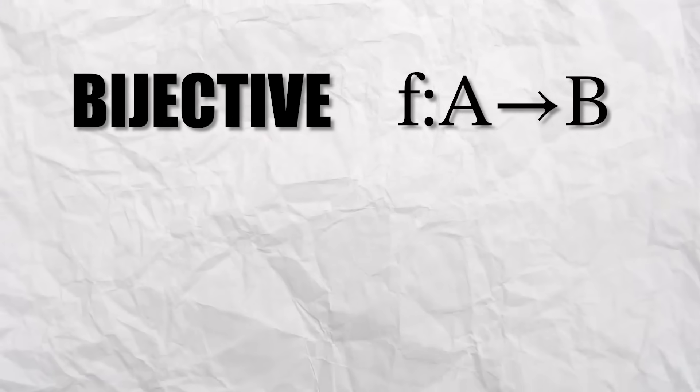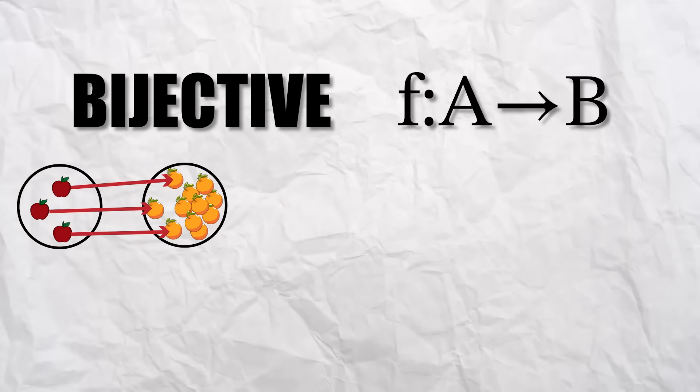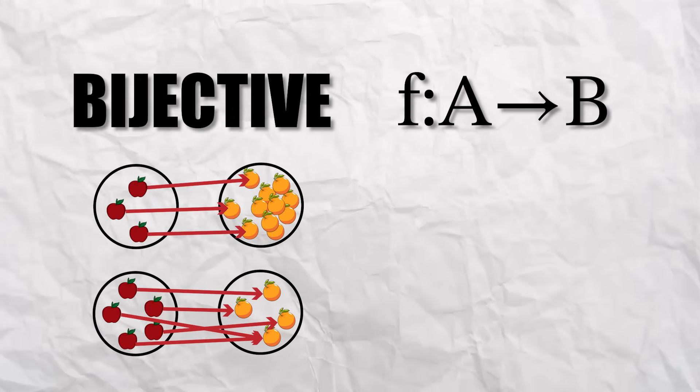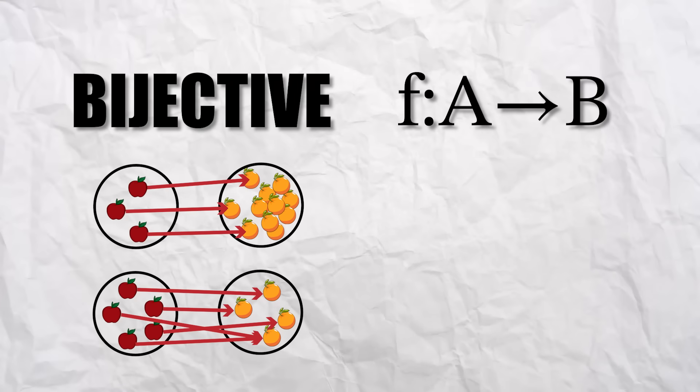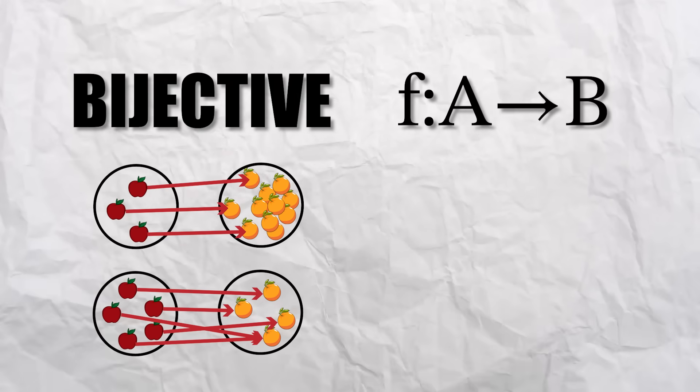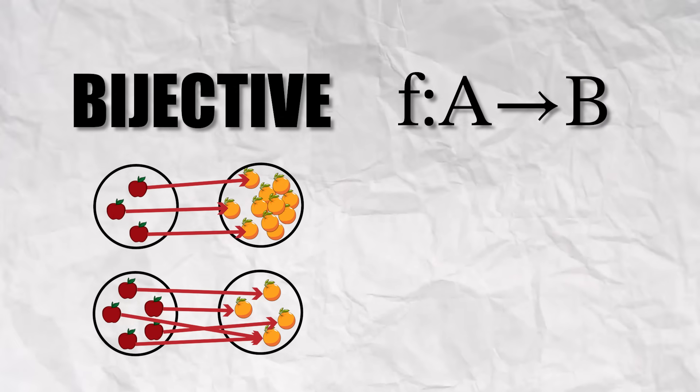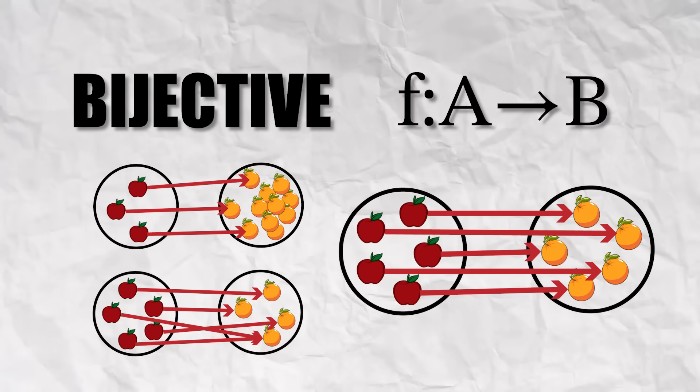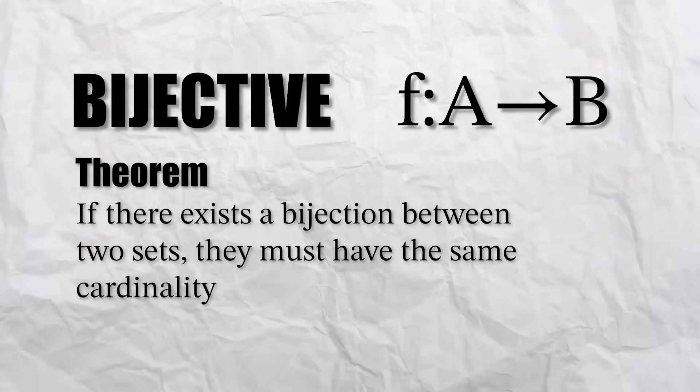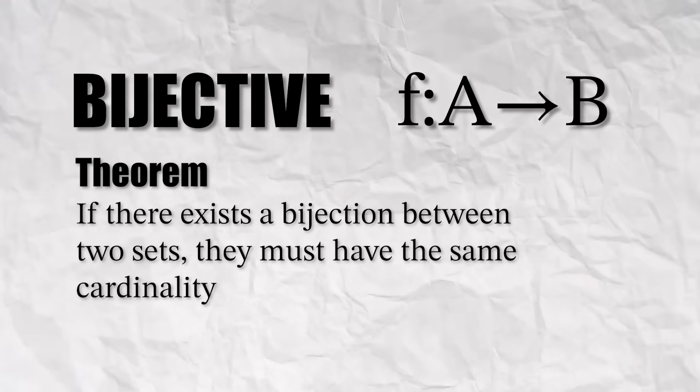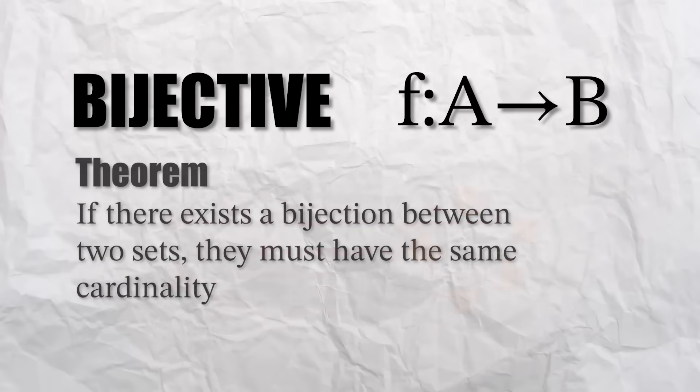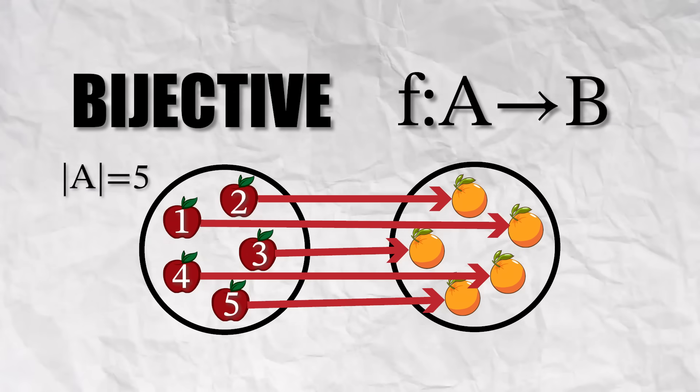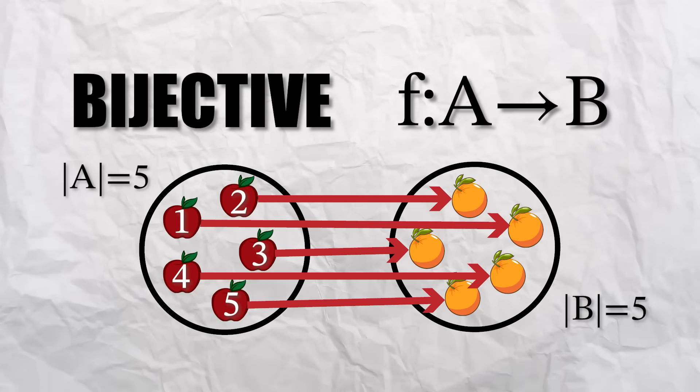Now finally, a bijective function is a function that is both injective and surjective, meaning every element in A maps to a distinct element in B, and each element in B is mapped to by something in A. This creates a pairing between elements so that no elements are left unpaired. From this, we can say that if there exists a bijection between two sets, they must have the same cardinality. So since we know set A has five elements, set B must also have five elements.